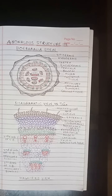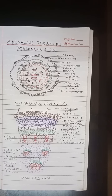The transverse section through the stem of Boragia shows a more or less circular outline, and its primary structure shows epidermis, cortex, endodermis, pericycle, and vascular bundles.